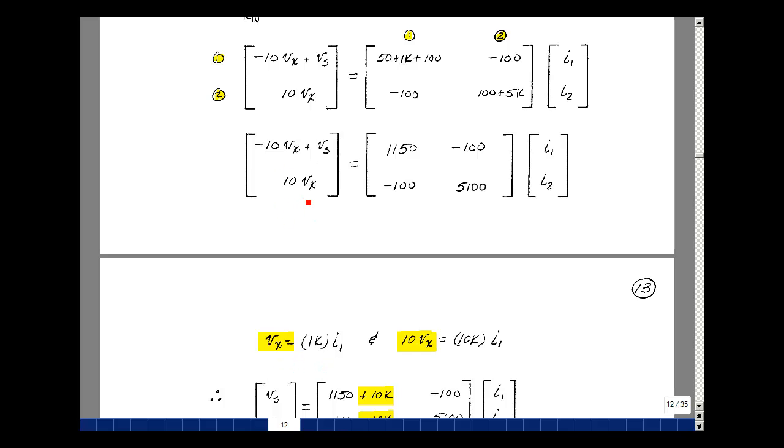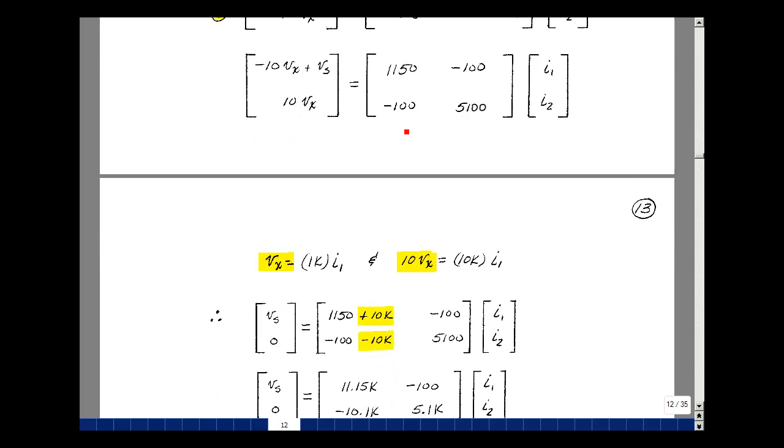Now, on this side of the equation, I've got 10 and minus 10 V sub X. So let's multiply this by 10. So 10 V sub X is 10K times I1. We bring things from the left-hand side to the right-hand side of the equation, we're going to change the sign. So we bring this over here, it's going to be equal to a plus 10 V sub X, and that's equal to 10K times I1, and that's associated with column 1 added to this term right here. Bringing this on the other side of the equation, we're going to have a minus 10 V sub X, and that's going to be equal to minus 10K times I1. So this column is multiplied by I1, minus 10K times I1.